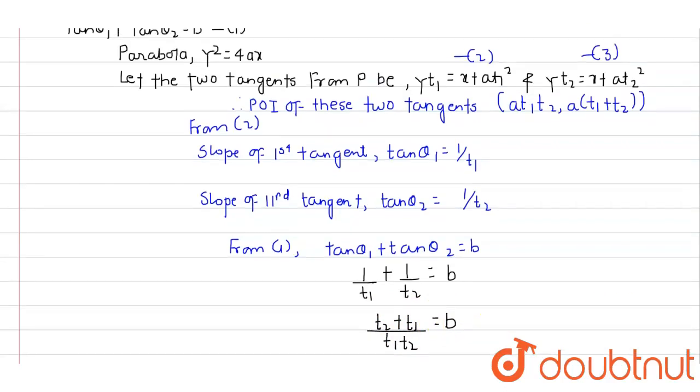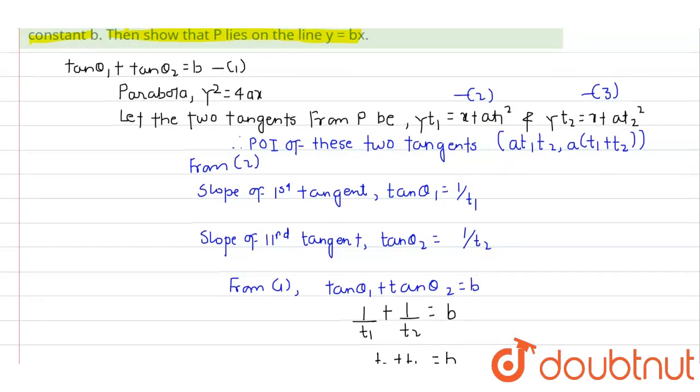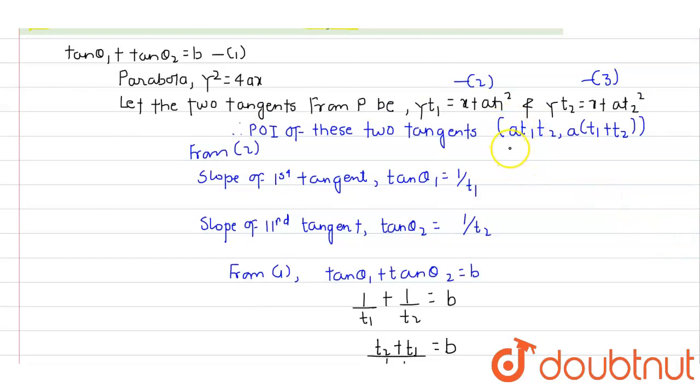Now from the point of intersection, t₁ + t₂ is y/a, and t₁t₂ is x/a. So substituting these values into our equation.